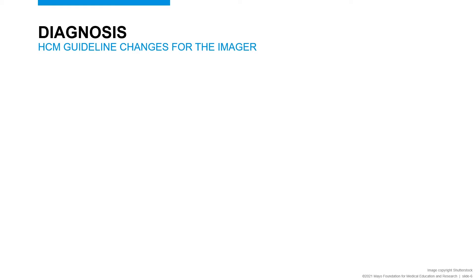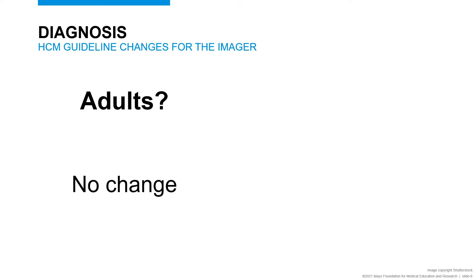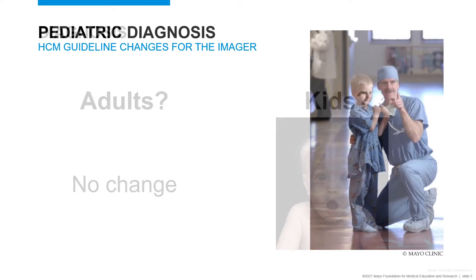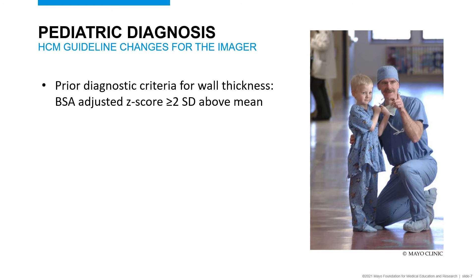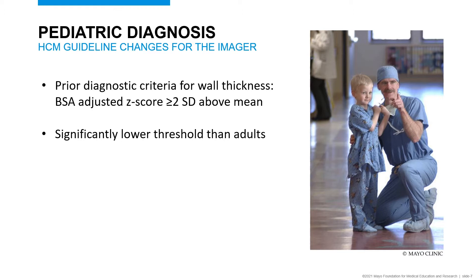With regards to diagnosis of HCM, for adult patients there's really no change. However, for children there has been a change. For diagnosis of hypertrophic cardiomyopathy in pediatric patients, we've historically utilized a Z-score for wall thickness — a BSA-adjusted measurement with a cutoff of two standard deviations above the mean. Comparing this to adults, this is a significantly lower threshold; the 15-millimeter adult cutoff corresponds to a Z-score of about six.